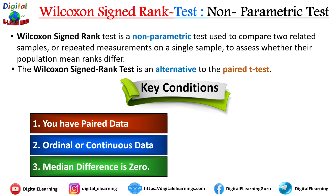The third condition is that the median difference is zero under the null hypothesis. Instead of focusing on the mean as the paired t-test does, this test looks at whether the median difference between paired observations is zero. In simple terms, it checks whether there is a consistent shift in values — either higher or lower — across the paired observations.